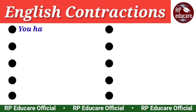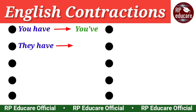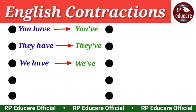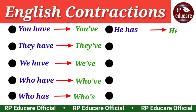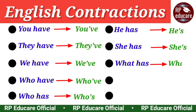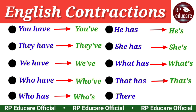I have - I've. You have - you've. They have - they've. We have - we've. Who have - who've. Who has - who's. He has - he's. She has - she's. What has - what's. That has - that's. There has - there's.